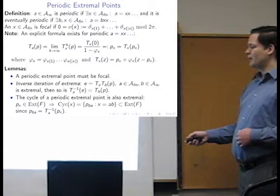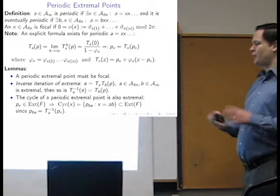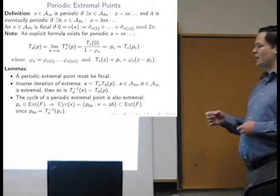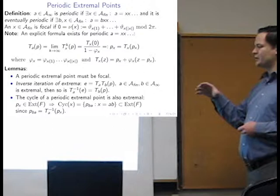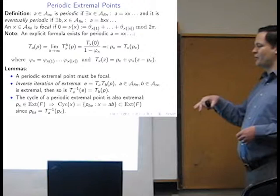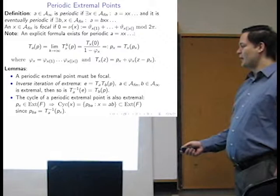So, we have the lemma that, if you have a periodic extremal point, then it must necessarily be focal. And basically the reason is that, if it were not focal because of the rotation, the non-zero rotation, basically we could map around the fixed point. So it would not be an extremal point anymore.